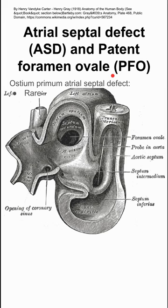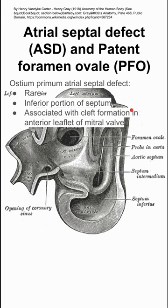The first is ostium primum atrial septal defect. This one is relatively rare. It's located in the inferior portion of the septum, and it's associated with cleft formation in the anterior leaflet of the mitral valve. That's an association you might see on board exams.